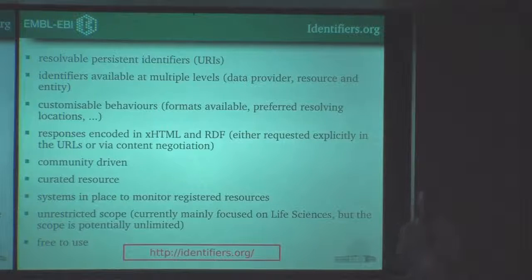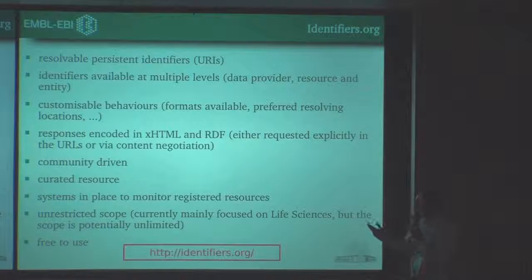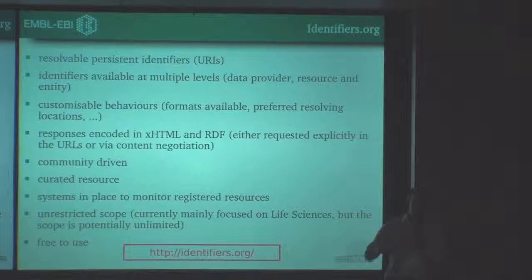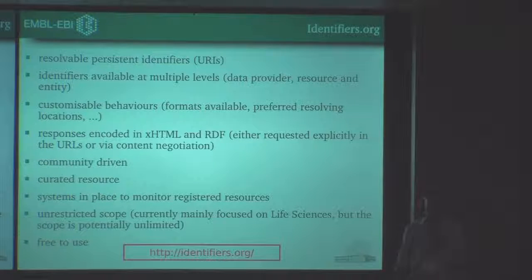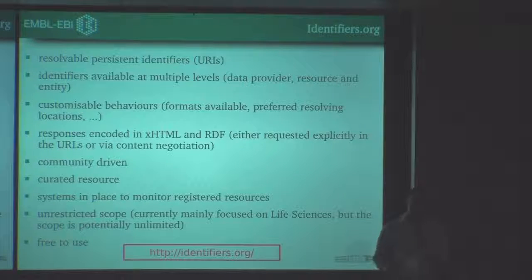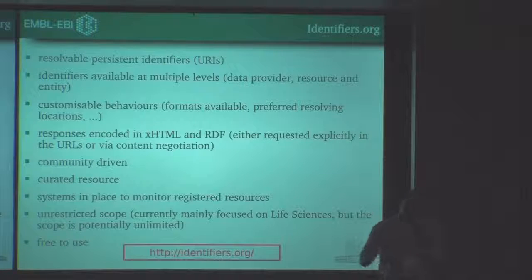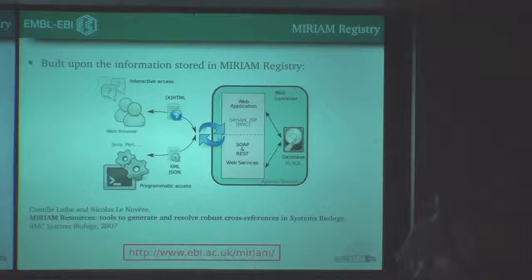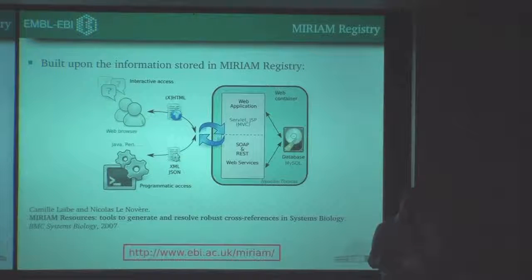So what does identifiers.org provide? It provides truly resolvable, persistent identifiers that are also location-independent. You can identify different kinds of things — from the data provider to the resource where you can access the data, right down to the entity itself. You can customize behavior when you query it, and it is committee-driven and curated, built on something called the MIRIAM registry.